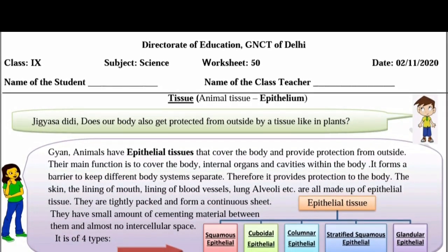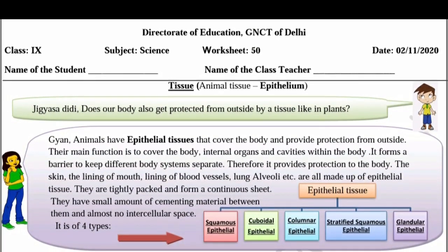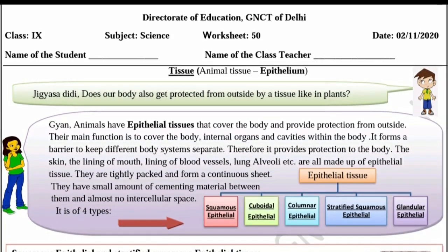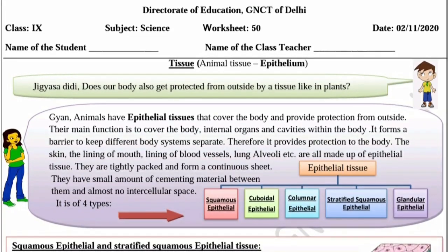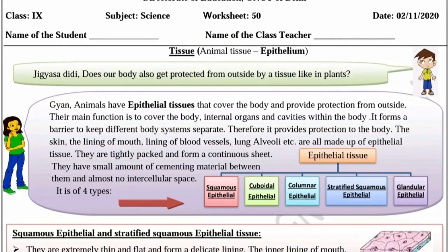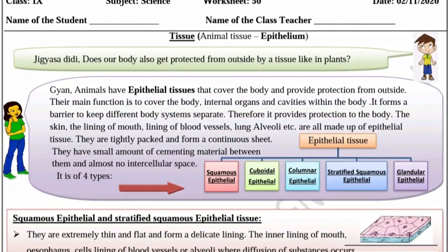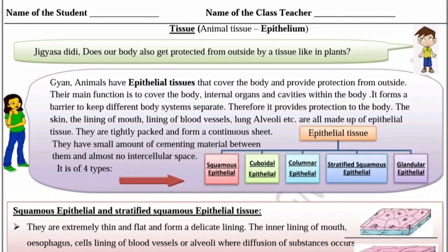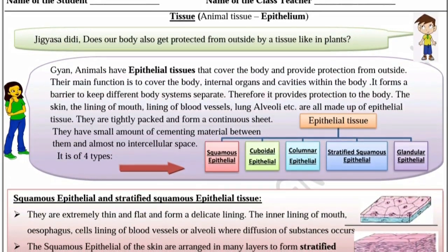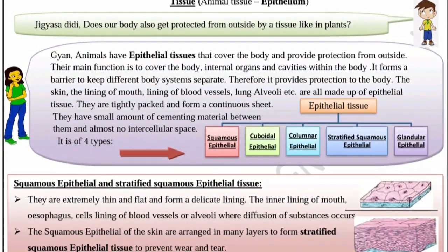Today we will discuss working number 50: tissue - animal tissue - epithelium. Animals have epithelial tissue that covers the body and provides protection from outside. Their main function is to cover the body, internal organs, and cavities within the body. It forms a barrier to keep different body systems separate, therefore providing protection. The skin, lining of mouth, lining of blood vessels, lung alveoli, etc. are all made up of epithelial tissue.